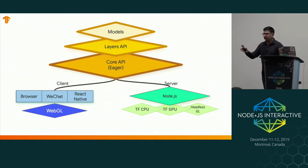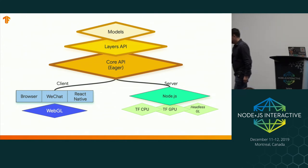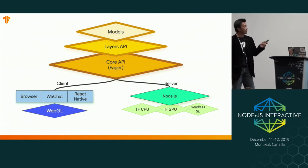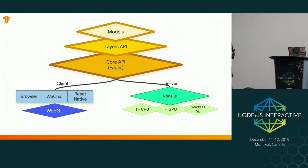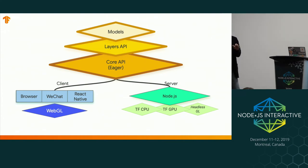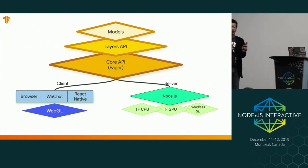At this point I want to turn it over to my colleague Ping, who will tell you more about the API. Thanks, Sandeep. I want to show you first a system diagram of the library. The high-level API allows you to use the model API directly. The layer API is a high-level API for model building, giving you a more abstract interface for building things easily.